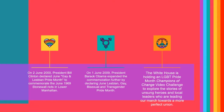On June 2nd, 2000, President Bill Clinton declared June the Gay and Lesbian Pride Month to commemorate the 1969 Stonewall riots in Lower Manhattan. In June 2009, President Barack Obama expanded the commemoration by including lesbian, gay, bisexual, and transgender Pride Month. Each year, the White House holds an LGBTQ Pride Month Champions of Challenge video where it explores the stories of unsung heroes and those leaders who are leading our march towards a more perfect community.